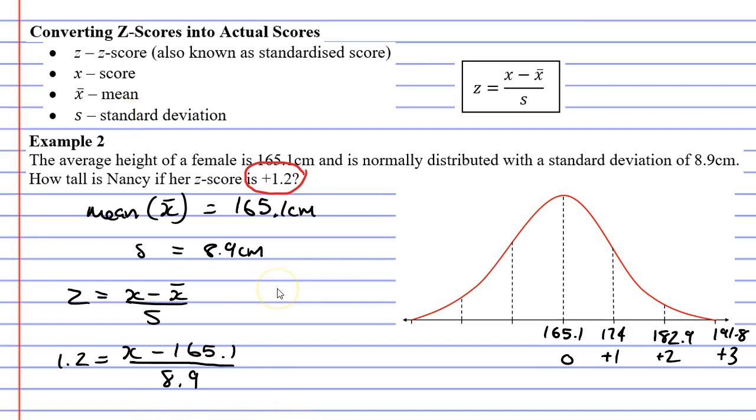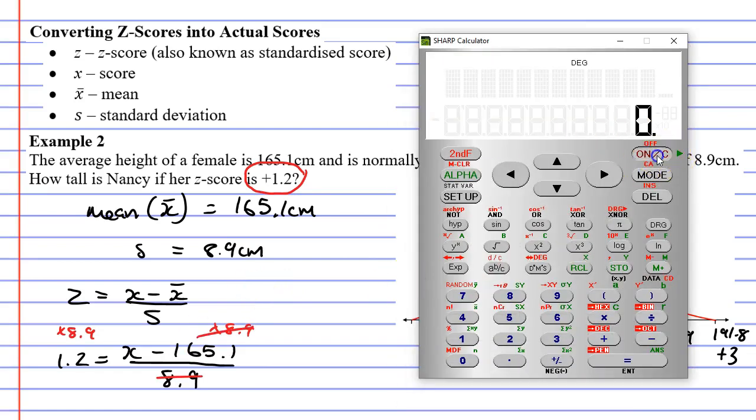So what we'll do first is we'll multiply both sides by 8.9. The reason we're doing this is it's going to cancel out the 8.9 beneath. So I'll bring up my calculator, 1.2 times 8.9. I'm working out this part here on the left, gives me 10.68.